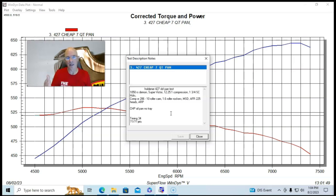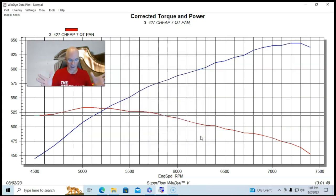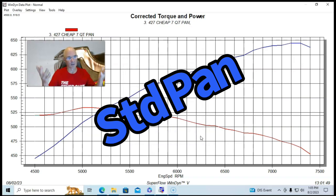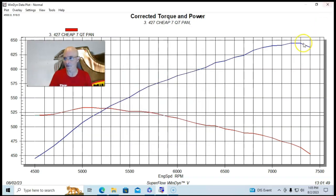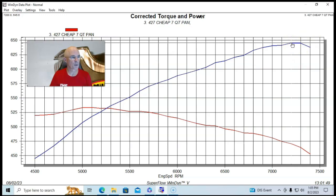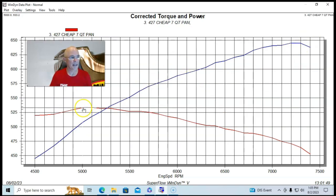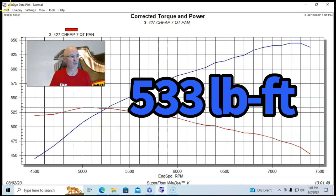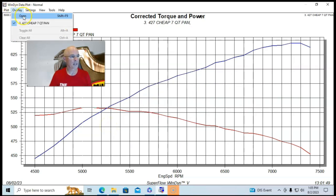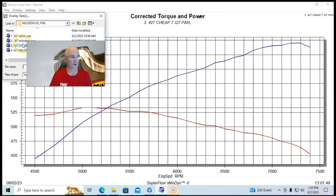So we did a pan upgrade like we did with the 347. We ran this thing out, obviously carbureted, MSD distributor and that kind of stuff. So run with this inexpensive pan that guys supplied from Coast High Performance. I'll go ahead and show you a picture of that. Our 427 produced 645, 646 horsepower and 533 foot pounds of torque. And here's what happened when, like with the 347, when we did the Milodon pan upgrade.